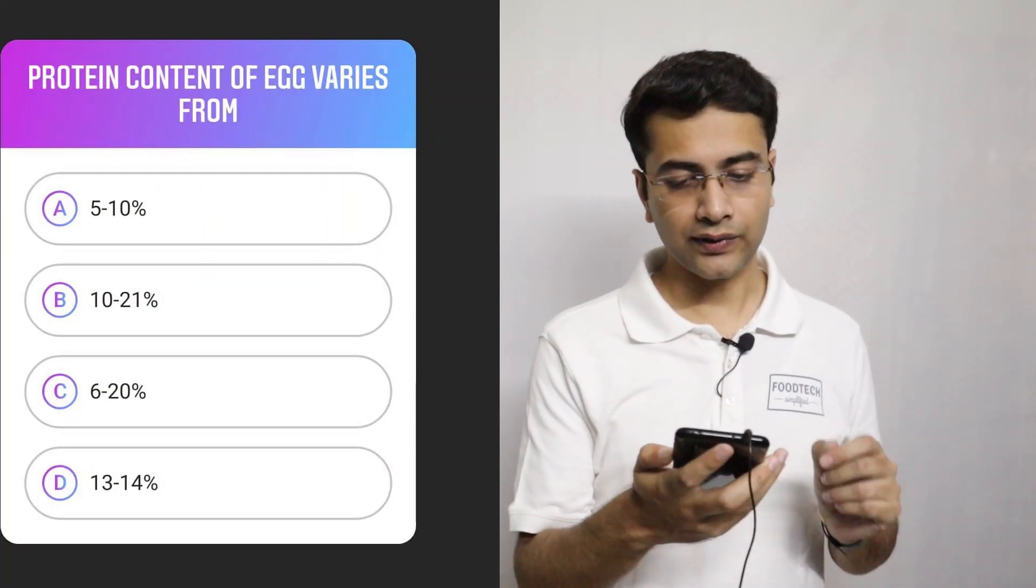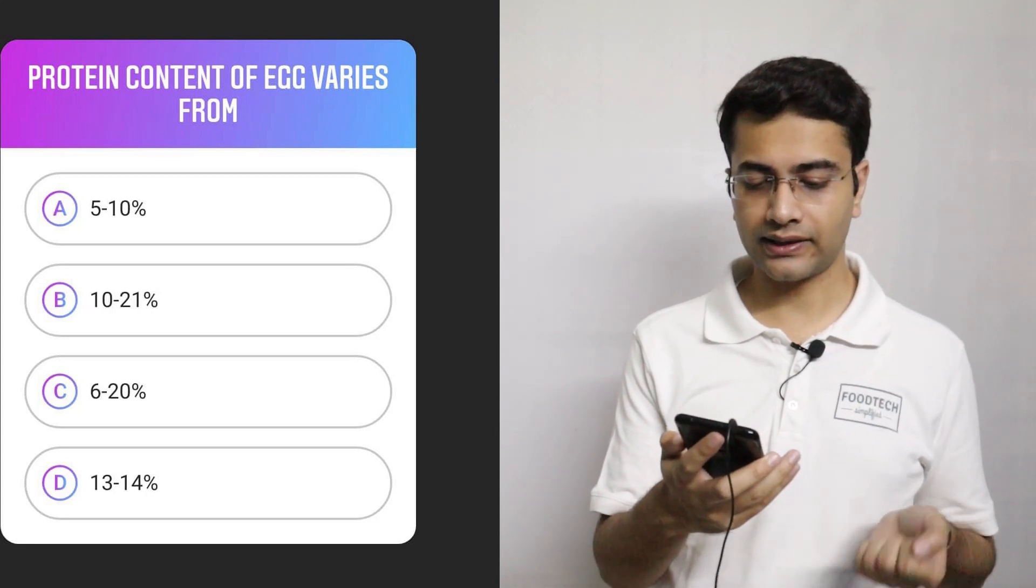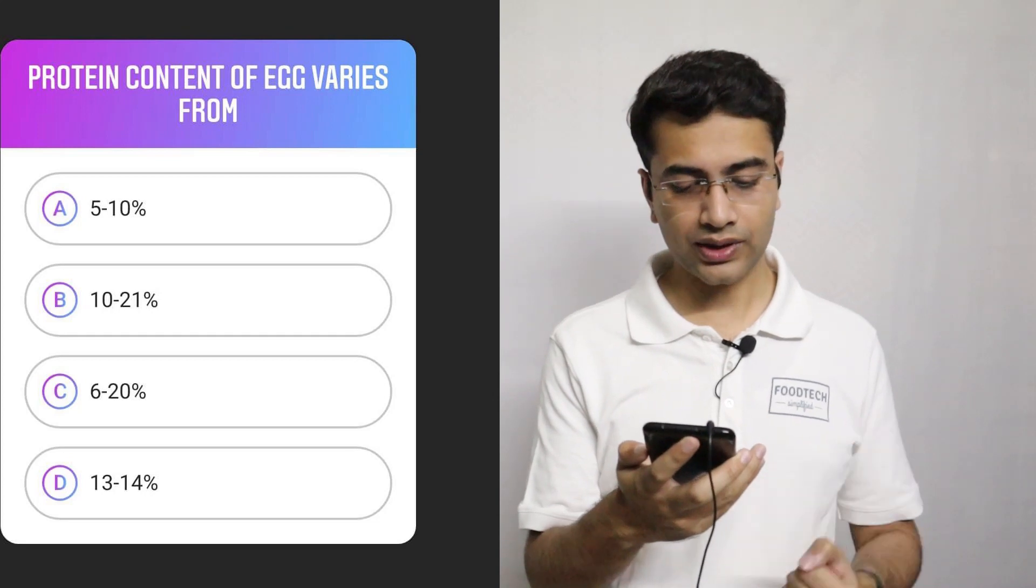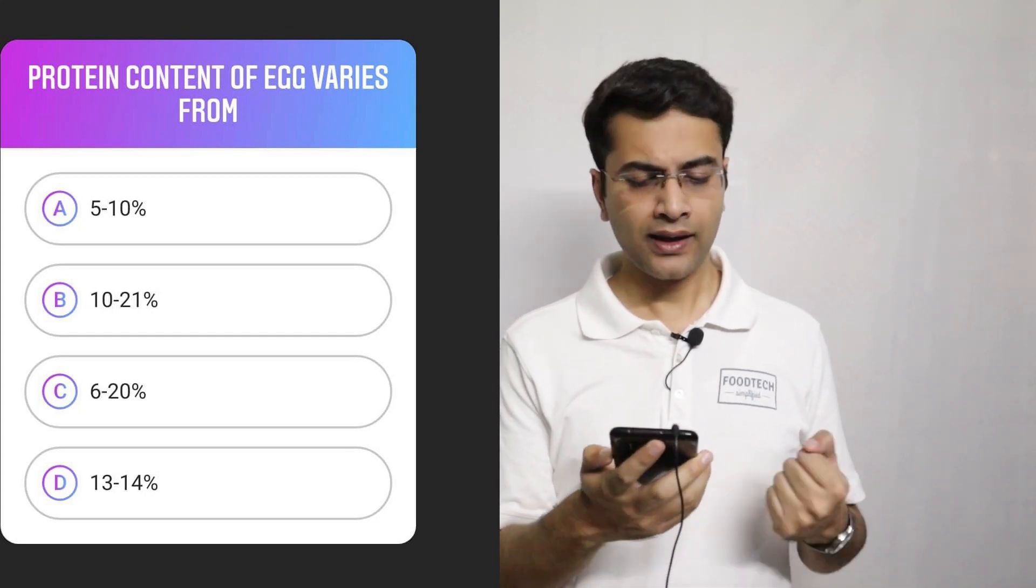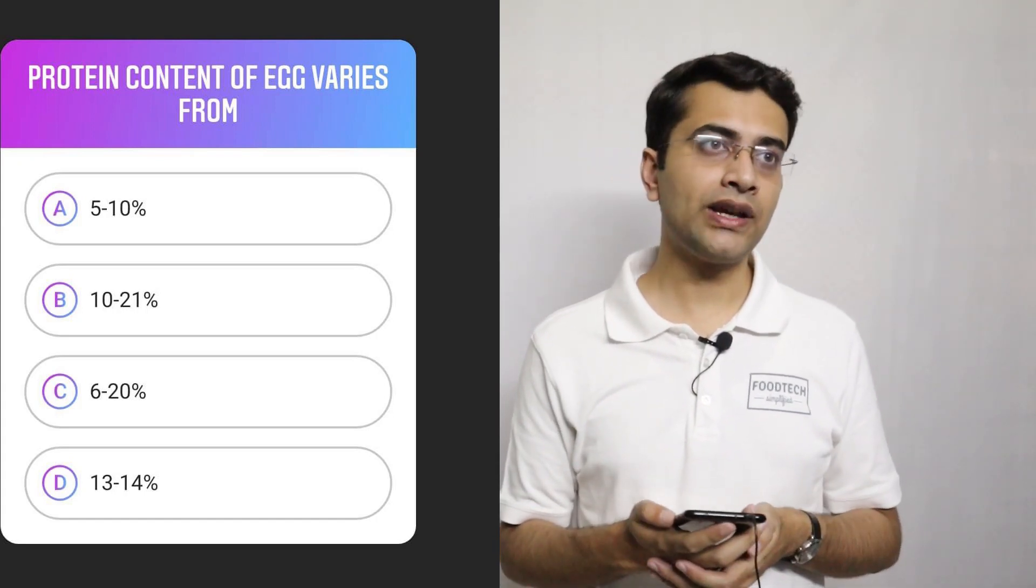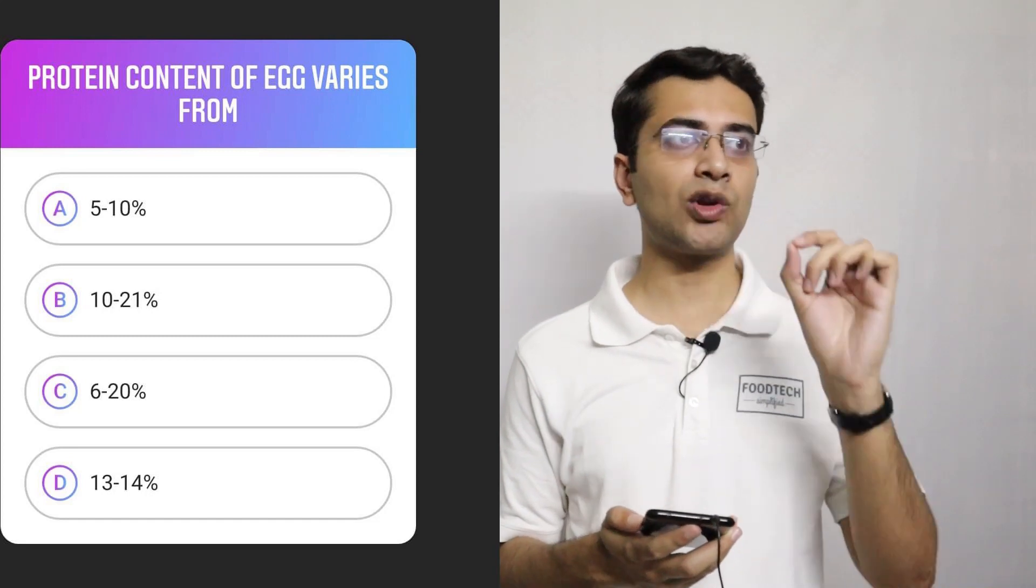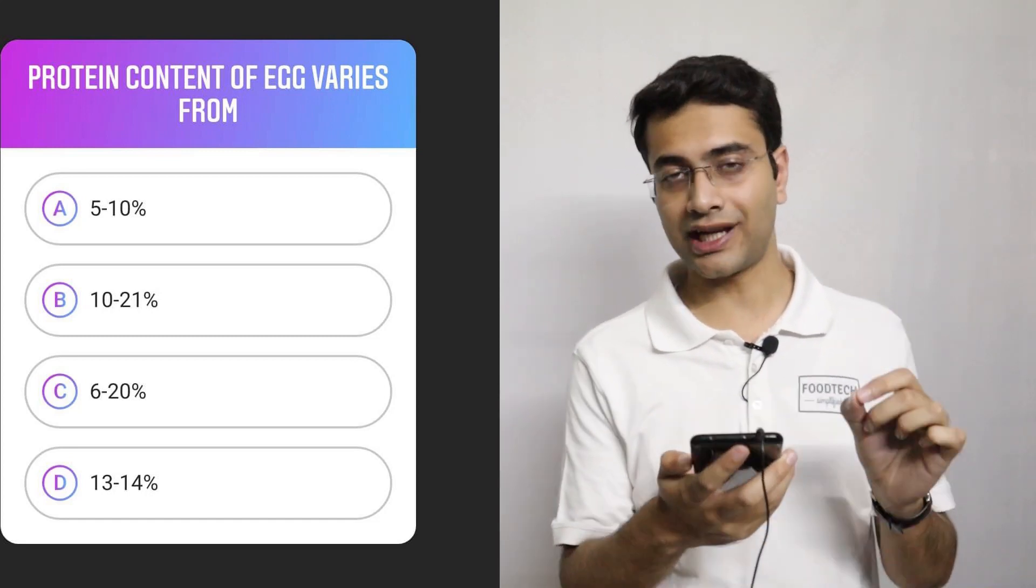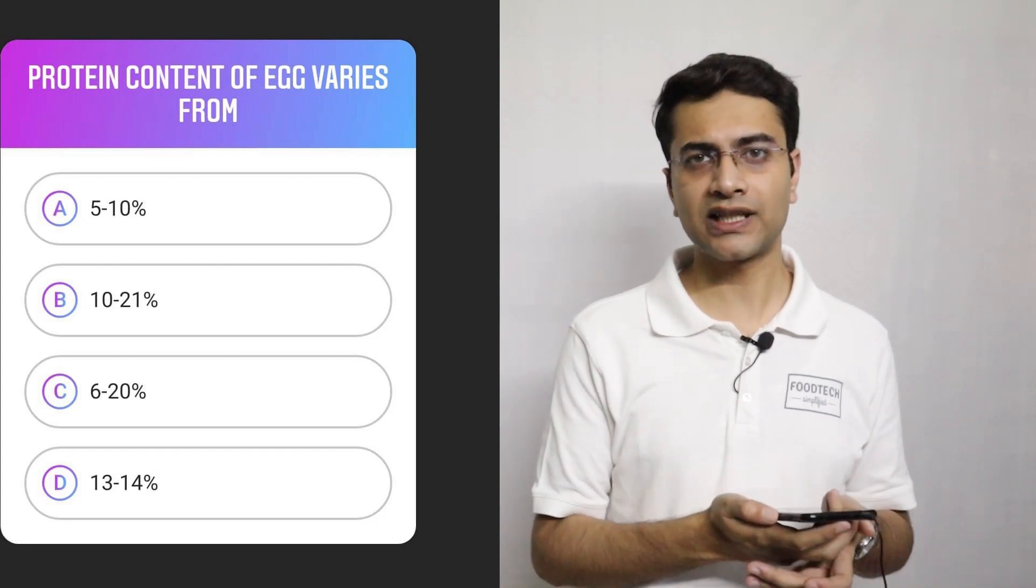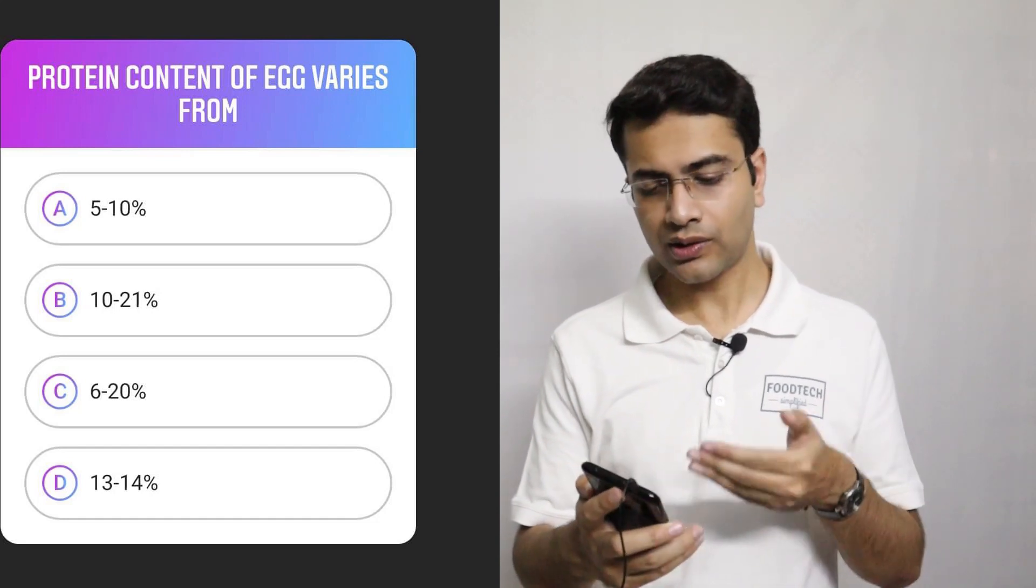Moving on to the next one. Protein content of egg varies from, now there are some ranges given. Option A 5 to 10%, option B 10 to 21%, option C 6 to 20%, option D 13 to 14%. Now there is obviously a range and there is always going to be a range. There is not going to be an exact value. Someone cannot say that there is 12.4% protein present in a wide variety of eggs. Obviously you can estimate the protein in a specific egg, but the protein content in these questions is going to depend on breed, demographics, what is the kind of feed and so on.